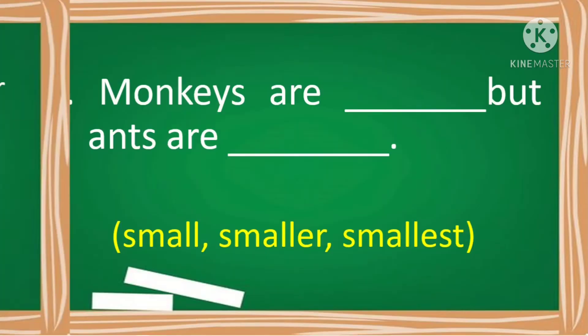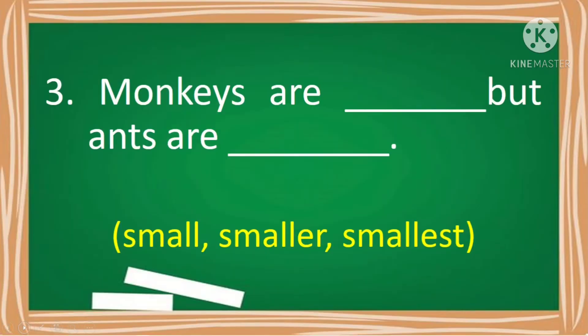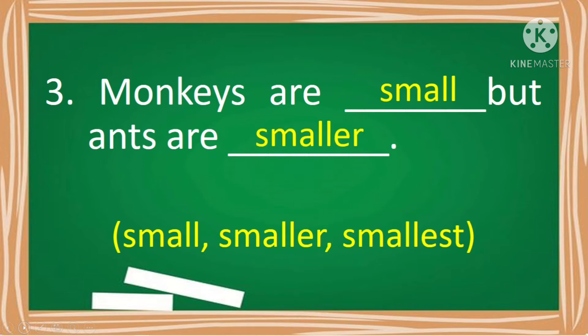Next. Monkeys are blank, but ants are blank — small, smaller, smallest. The answer is small and smaller. Monkeys are small, but ants are smaller.